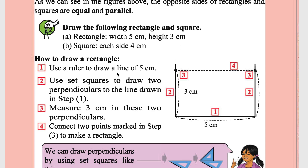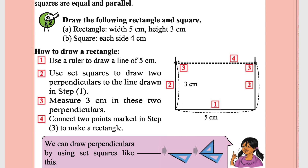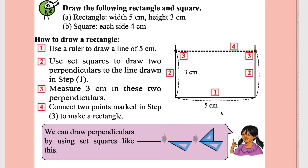Use a ruler to draw a line of 5 cm. Then use set squares to draw two perpendicular lines. To use the set square, keep one edge stable and move the other one along it.